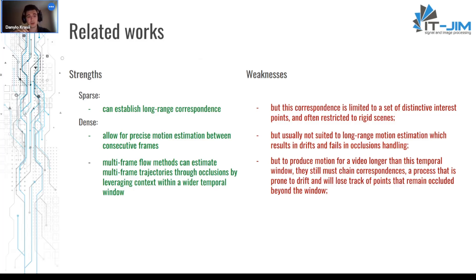There exist some multi-frame flow methods that can estimate multi-frame trajectories through occlusions by leveraging context within a wider temporal window, but to produce motion for a video longer than this temporal window, they still must chain correspondences, a process that is prone to drift and will lose track of points that remain occluded beyond the window.